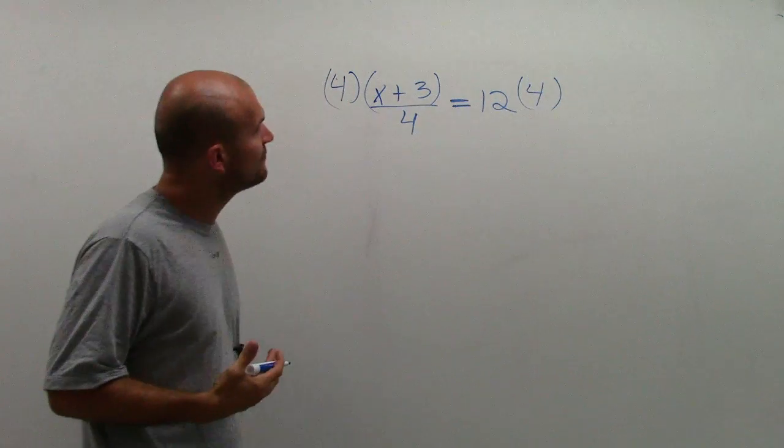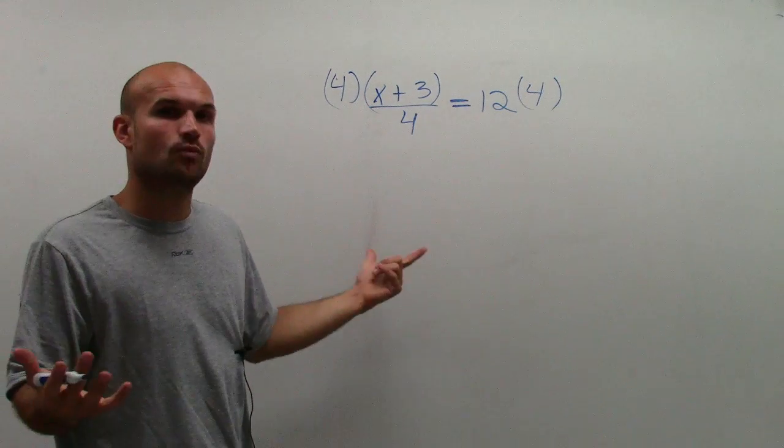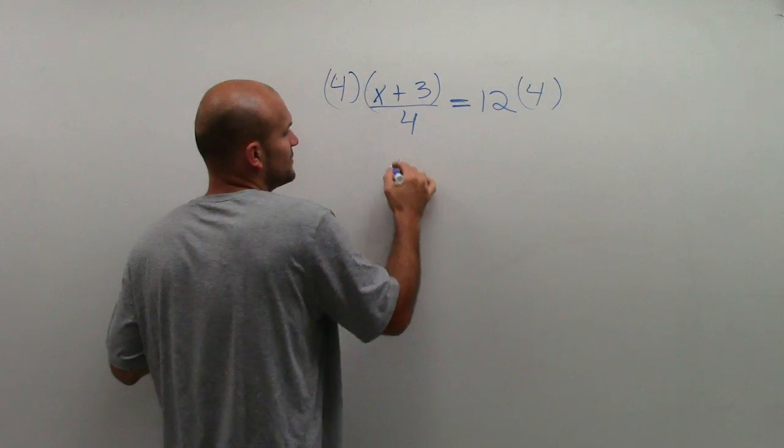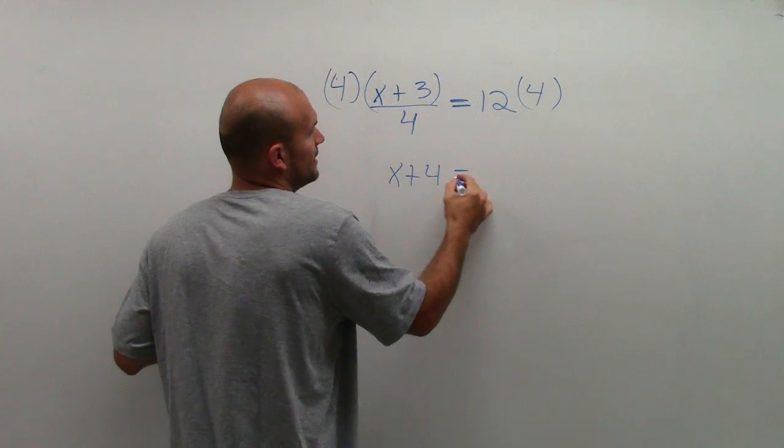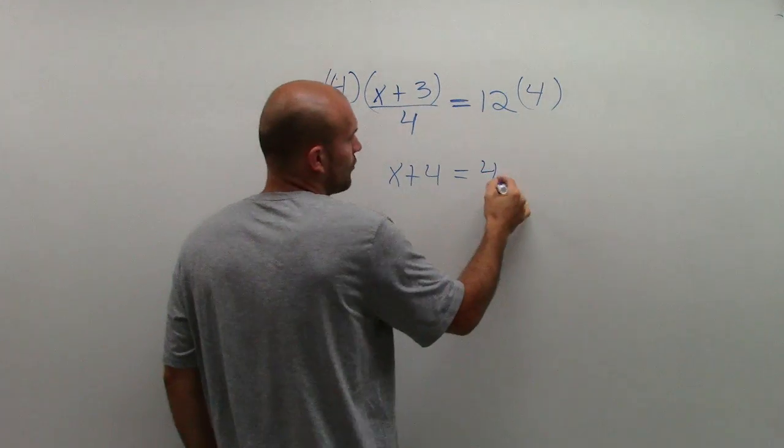So now we multiply by 4. 4 divided by 4 equals 1, right? So I'm just going to be left with x plus 3 equals 12 divided by 4, which is 48.